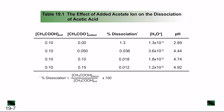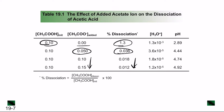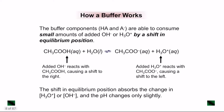Starting with 0.10 M acetic acid and no acetate ion, the percentage of dissociation is about 1.3%. When you add 0.05 M acetate ion, the percentage dissociation decreases rapidly as the acetate concentration increases. As the amount of acetate ion increases, there is minimal dissociation, and the pH values become very close to each other. This is the idea behind a buffer.